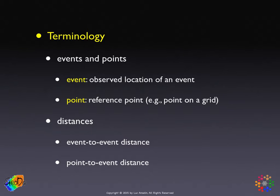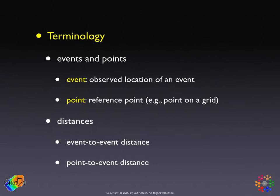The event is the actual observed location of an event. So they're all points, but events are points where something happens, and then the term 'point' is used for reference points. These are not necessarily points where something happens — typically they are points on a grid. And then we have two kinds of distances: the distances between the events themselves, which is referred to as event-to-event distance.